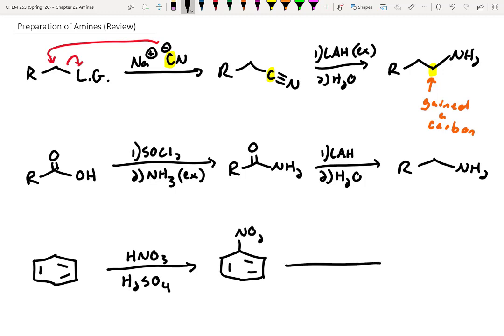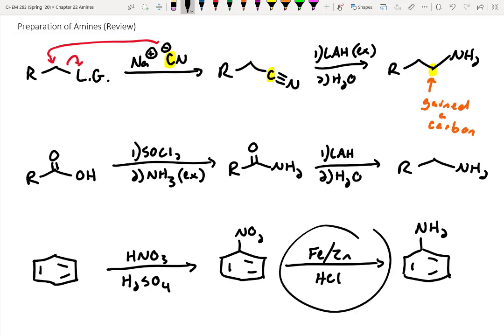And then once we have nitrobenzene, we can convert that NO2 group into an NH2 group by reducing it and thereby making aniline. And to do this reduction, we normally need some sort of metal, it's going to be iron or zinc typically, and hydrochloric acid and that will reduce us to aniline. So that's a useful way for making aromatic amines. This doesn't really work well for non-aromatic molecules, so we're just going to stick with this as being our primary route for making aromatic amines.